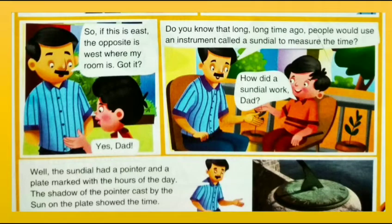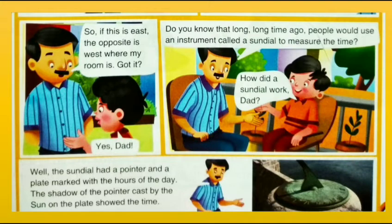Ian says, 'So if this is east, the opposite is west — where my room is. Got it!' His father continues, 'Yes. Do you know that long, long time ago people would use an instrument called a sundial to measure the time?' Ian asks how a sundial worked. His father explains: 'The sundial had a pointer and a plate marked with the hours of the day. The shadow of the pointer cast by the sun on the plate showed the time. You can see a sundial in the picture.'